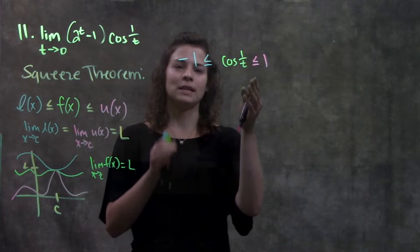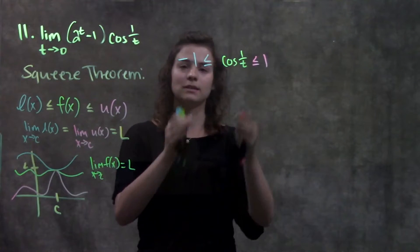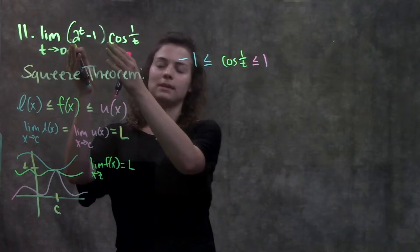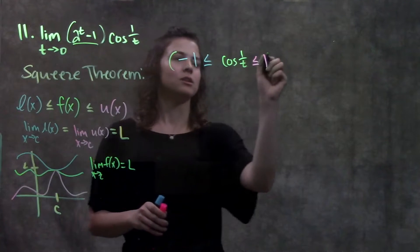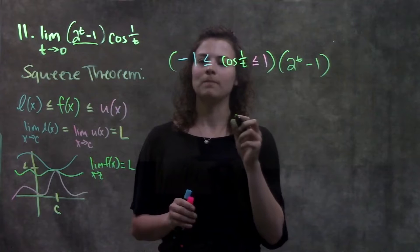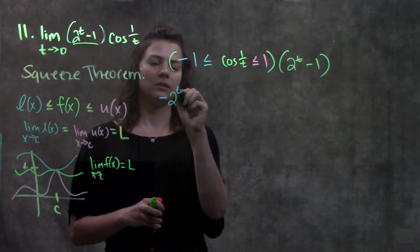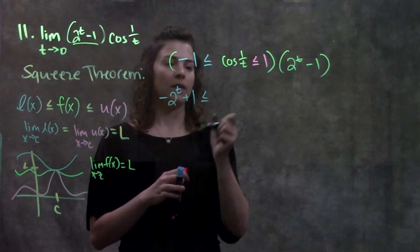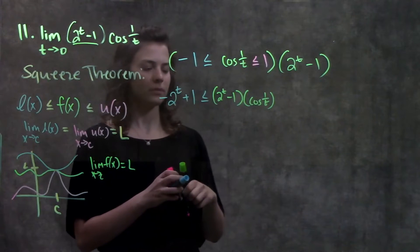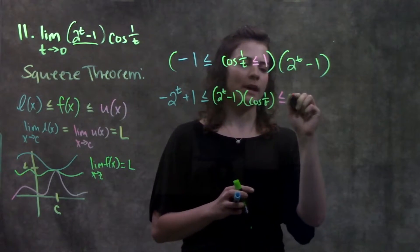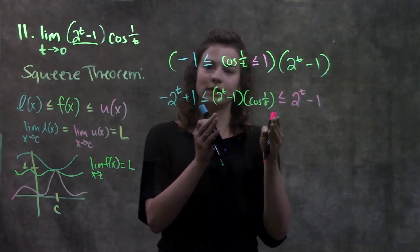I have cosine one over t bound by those two values, but I'm interested in the entire function, not just cosine one over t. So I need to multiply each part by what I'm missing — by two to the t minus one. Multiplying everything by two to the t minus one, on the left I get negative two to the t plus one, which distributes to give minus two to the t plus one. In the middle I have my two terms — the full function I'm interested in. On the right I get two to the t minus one. Now I have the two bounding functions.